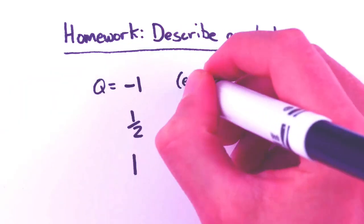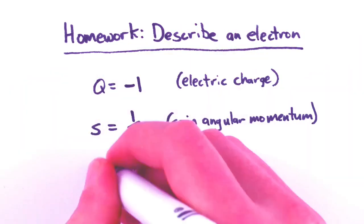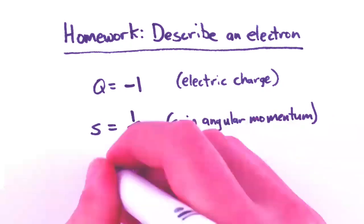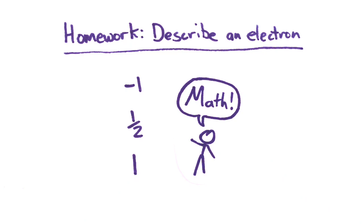We physicists call these properties electric charge, spin, and lepton number, but the electron doesn't care what we call them. The fundamental properties that an electron has are just numbers, mathematical properties.